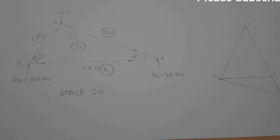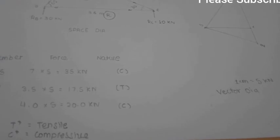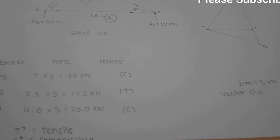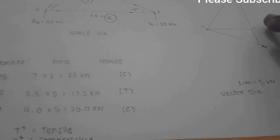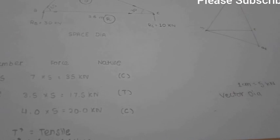Now your vector diagram has been drawn and your space diagram has been drawn. So now the force table has to be calculated. As you can see, I have drawn the force table as follows: PS, PR, SR, and SQ. We have to calculate the distance between P and S, P and R, S and R, and Q and S.